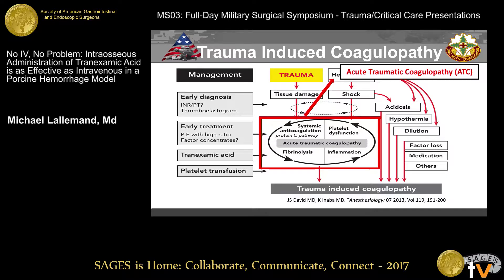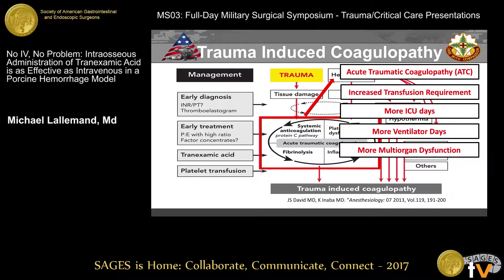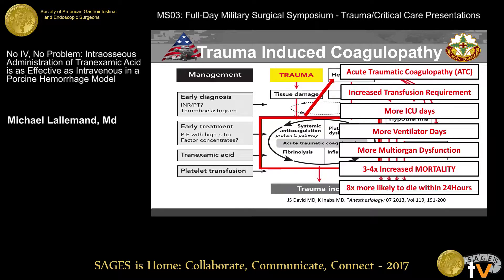The reason we focus on acute traumatic coagulopathy is that patients with this condition have an increased transfusion requirement, more ICU days, more days on the ventilator, more instances of multi-organ system dysfunction, a three to four times increase in mortality, and they're eight times more likely to die within the first 24 hours.